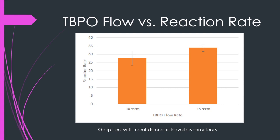The following graph shows the TBPO flow versus the reaction rate at 10 sccm and 15 sccm. This is graphed with the confidence interval as error bars. When the t-test was performed on the mean initiated flow rates we get a value of 0.0496 which is below the 95% confidence value of 0.05, which proves that the data is statistically significant.